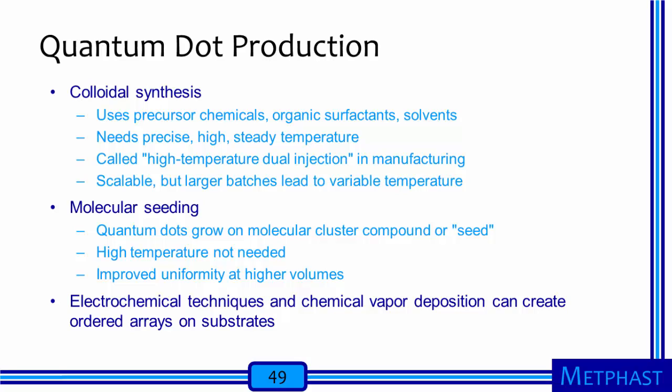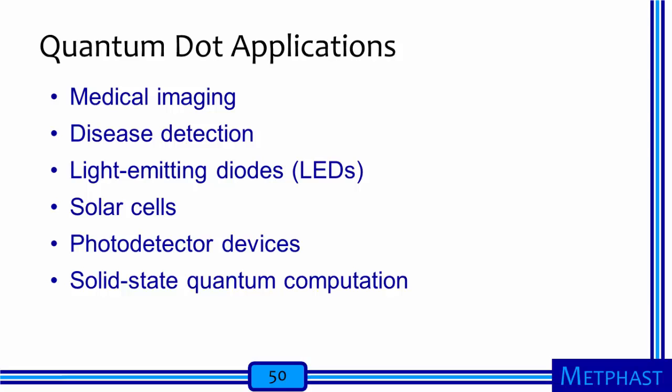Electrochemical techniques and CVD can be used to create arrays of quantum dots on substrates. Applications for quantum dots include medical imaging, disease detection, light-emitting diodes, solar cells, photodetector devices, and solid-state quantum computation.